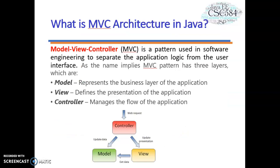Moving on to MVC. MVC is a Model-View-Controller architecture — a pattern used in software engineering to separate the application logic from the user interface. MVC has three layers: Model, which represents the business layer of the application; View, which defines the presentation of the application; and Controller, which manages the flow of the application. We will look into this in more detail in the next topic.